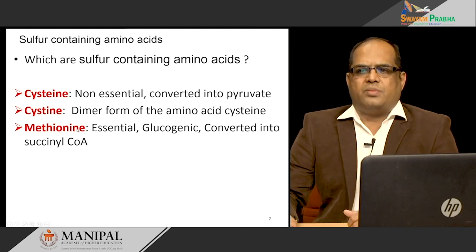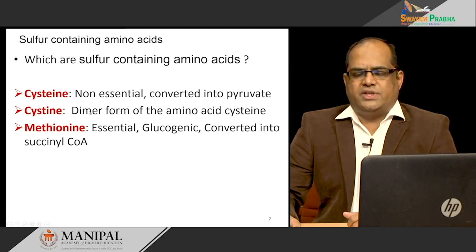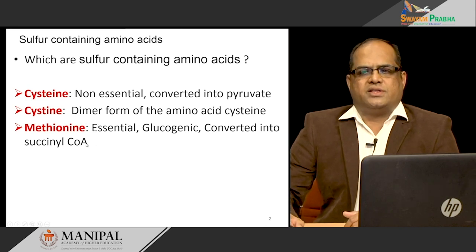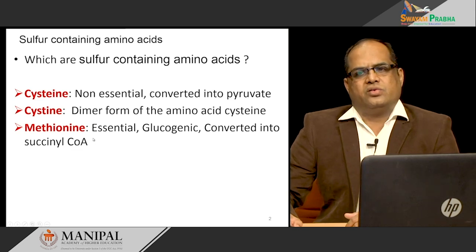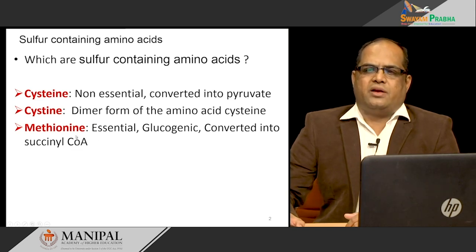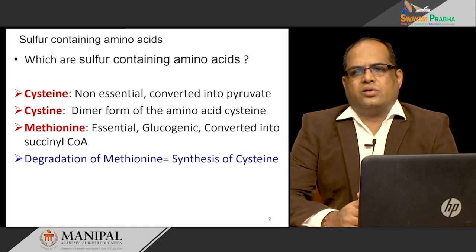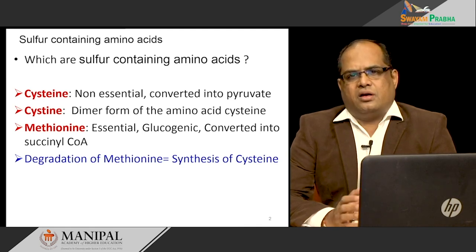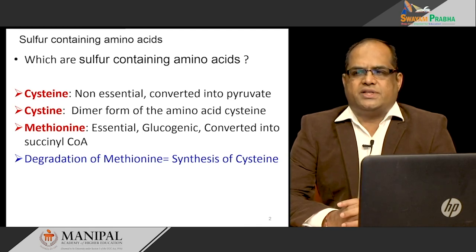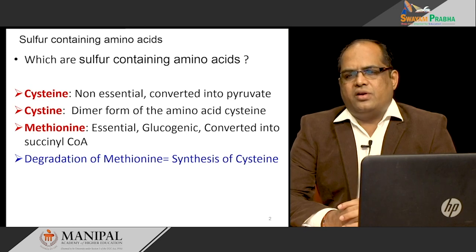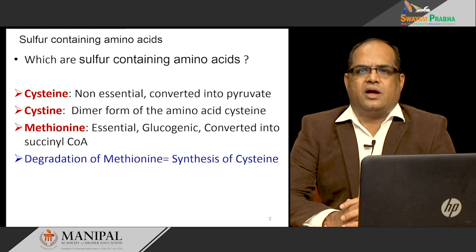Methionine is glucogenic, meaning the carbon skeleton of methionine can be used to synthesize glucose. In its metabolism, methionine can be converted into succinyl-CoA, which can enter the TCA cycle and from there glucose can be synthesized. Degradation of methionine equals synthesis of cysteine — you can synthesize cysteine during the metabolism of methionine. If methionine is not available, then cysteine becomes an essential amino acid.